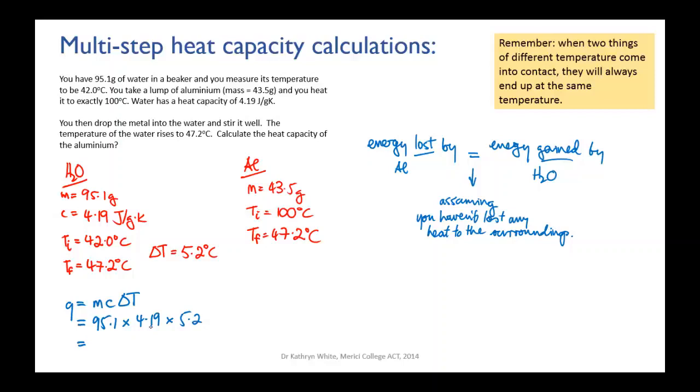And when you calculate that you will get 2072 joules - never forget your units. So we know that the water in warming up has gained 2072 joules. Now that's the amount of energy that must have been lost by the aluminum, so Q over here must equal 2072 joules.